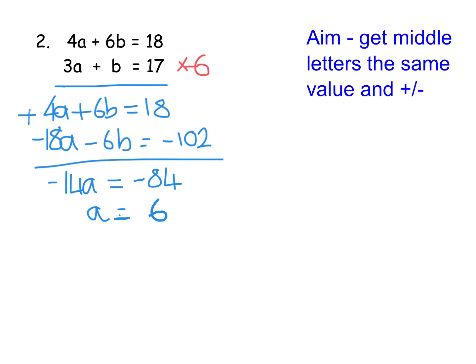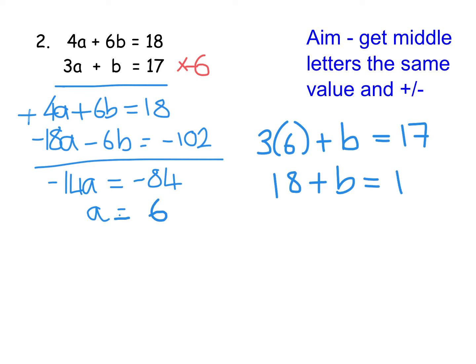Now I know what a is, I'm going to substitute that into my equation. Both equations have positives, but the bottom one is easier because it saves having to do a multiply by 6 as well. So using the bottom equation with a equals 6: 3 times 6 plus b equals 17. 3 times 6 is 18, so 18 plus b equals 17. Then 17 take away 18 gives negative 1. So my final answer is a equals 6, b equals negative 1.